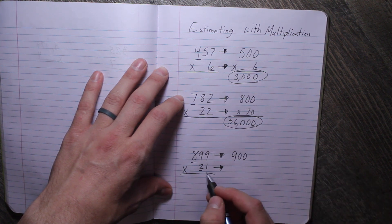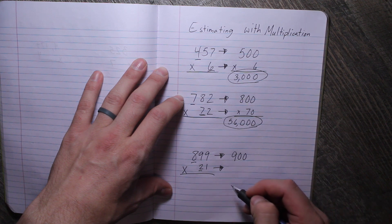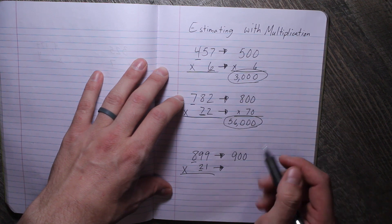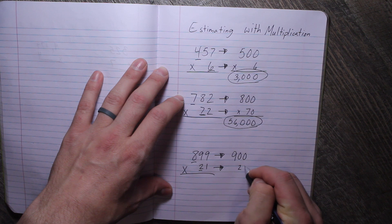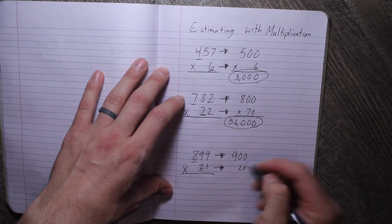And 21. Is 21 closer to 20 or is it closer to 30? Well, it's closer to 20 because it's very close to 20.